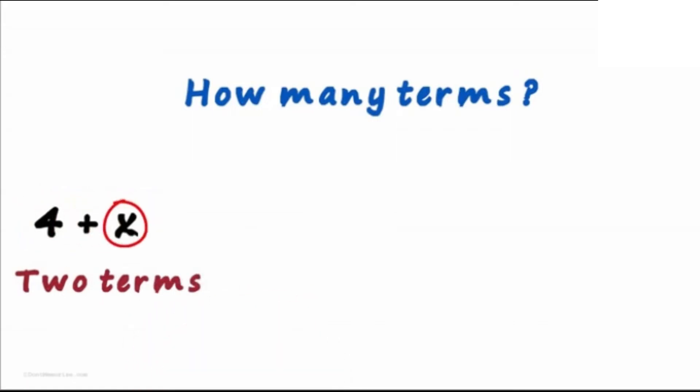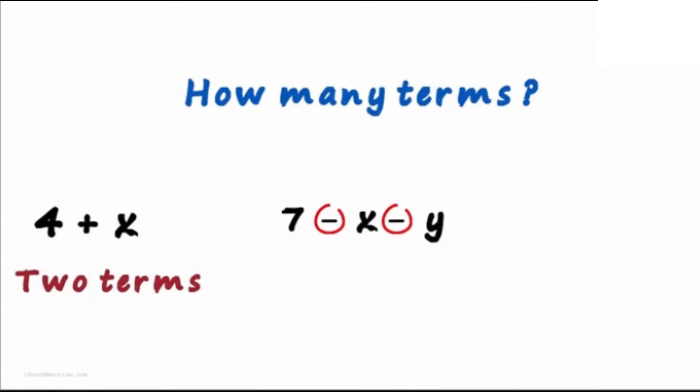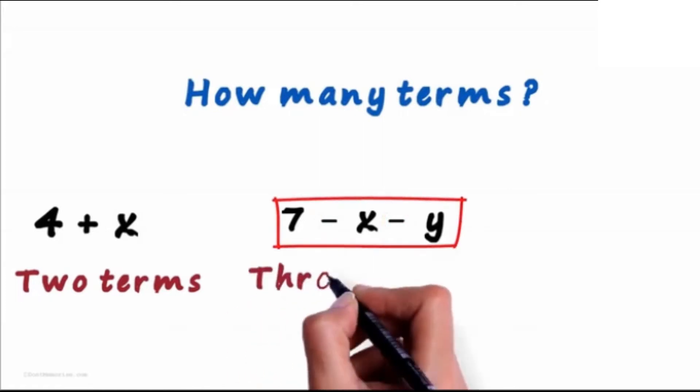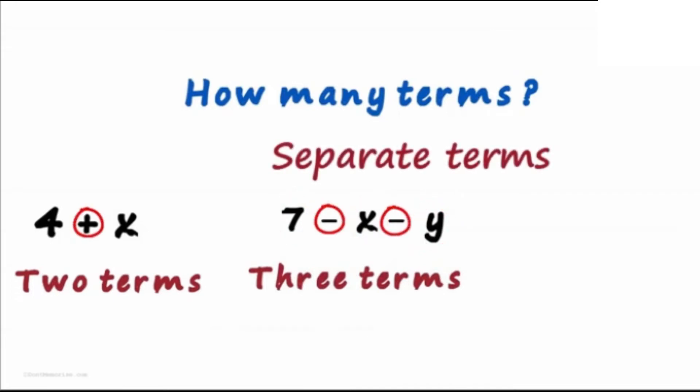Here's the second expression, 7 minus x minus y. We have two minus signs here. It means that this expression has three terms, 7, x and y. Remember, plus and minus separate the terms.